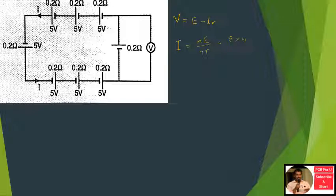For the other 0.2 ohm, if there are number of cells which is 0.2 ohm, that is 8 into 0.2 ohm.